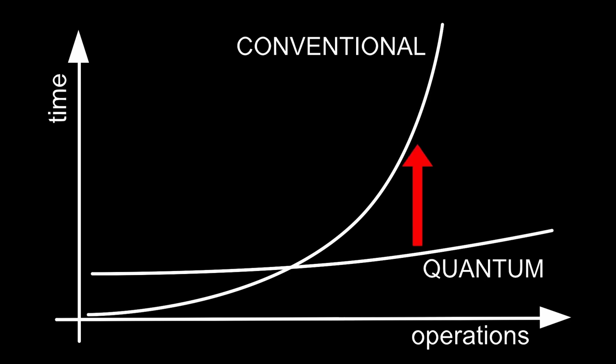So the idea is that regardless of how slow the qubits are, eventually the quantum computer will outperform the conventional computer because it needs fewer operations. That's the theory.